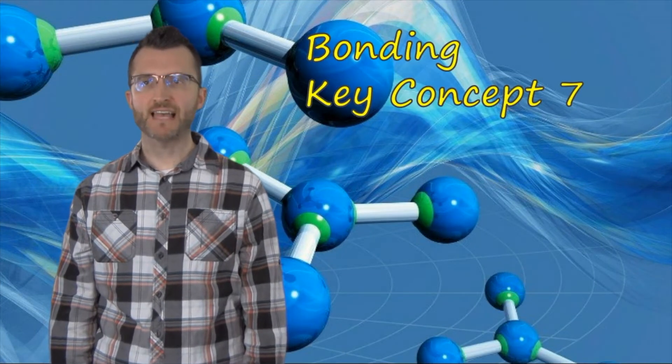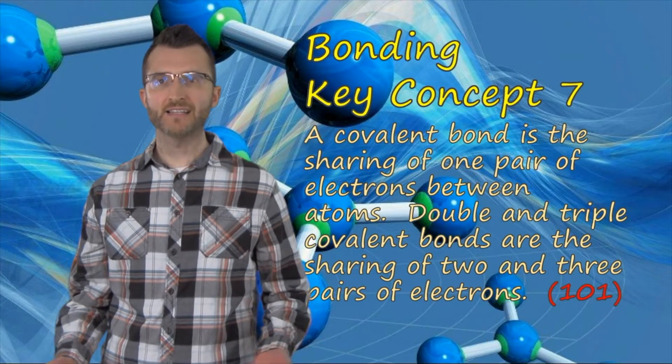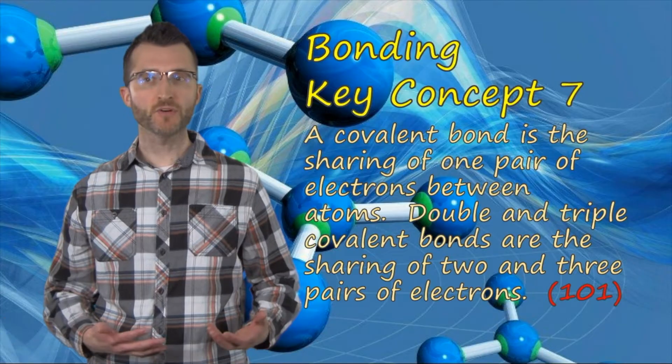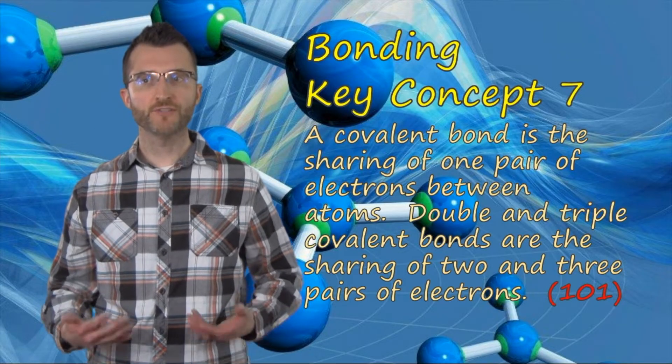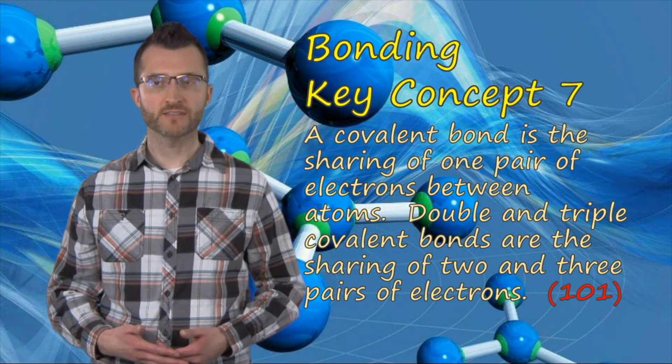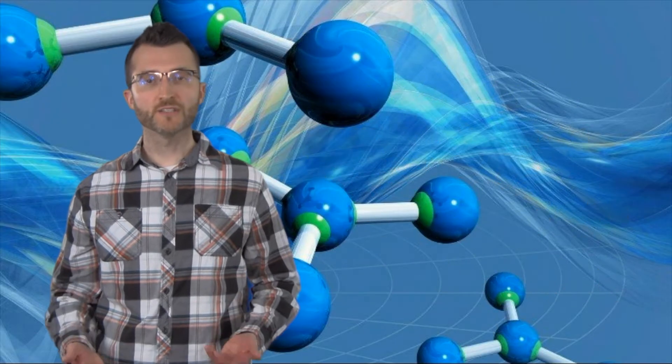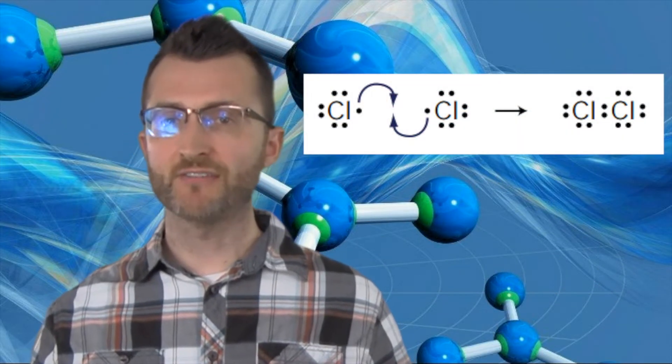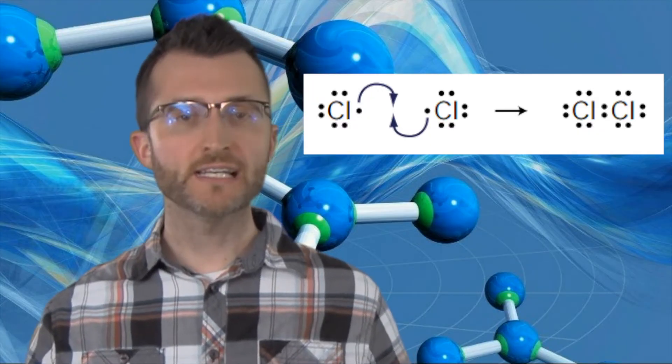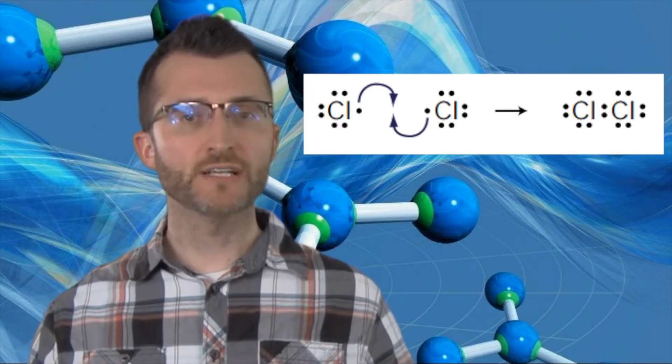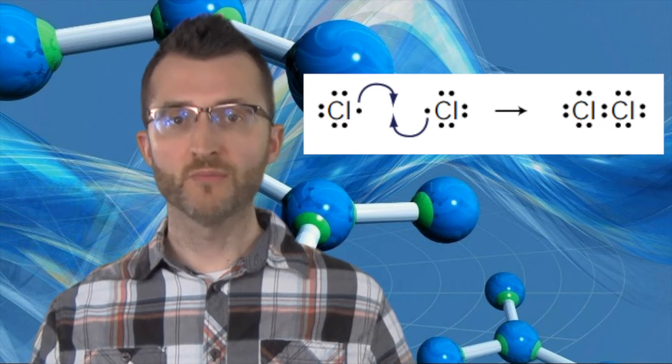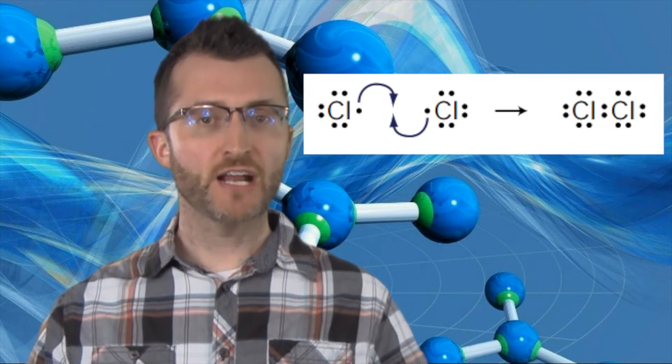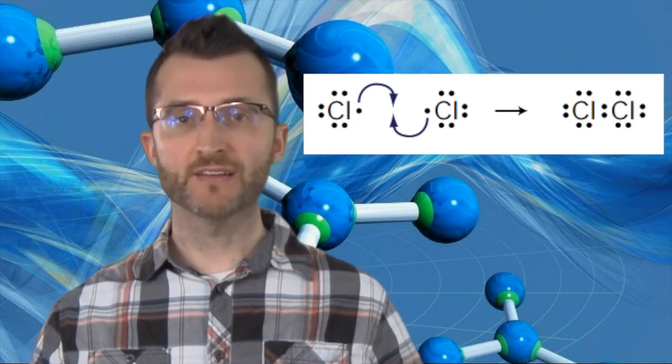Bonding key concept seven. A covalent bond is the sharing of one pair of electrons between atoms. Double and triple covalent bonds are the sharing of two and three pairs of electrons. For example, if we look at Cl2, each chlorine atom originally has seven valence electrons. To get a stable octet, each chlorine atom would need one more valence electron. Both chlorine atoms will get together, share one each for a pair in the center. We call that a single bond.